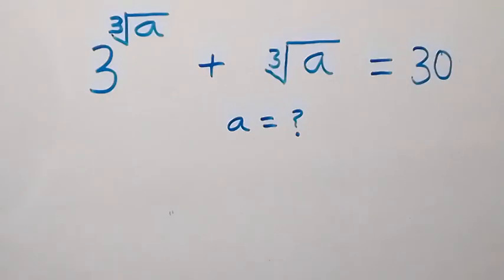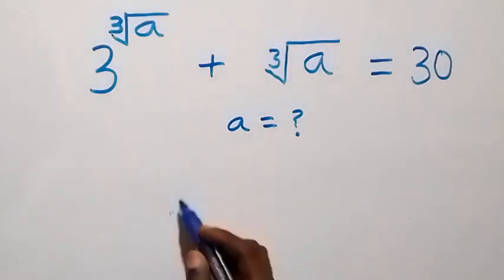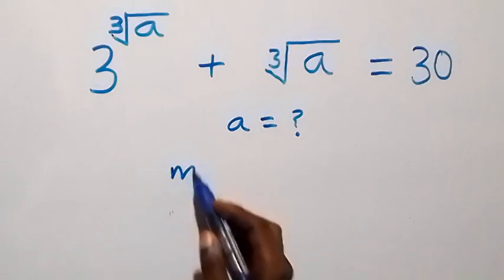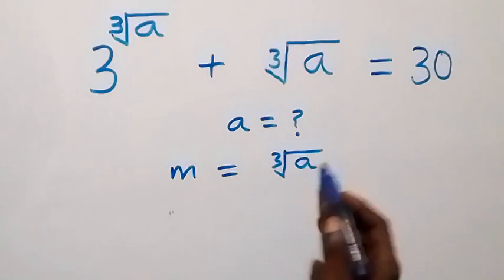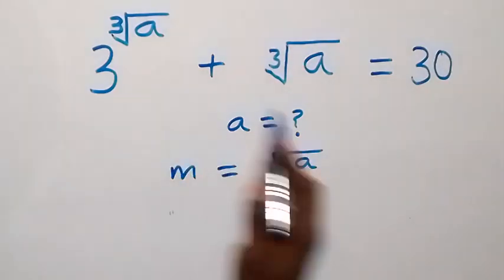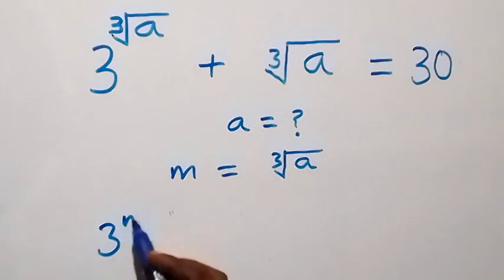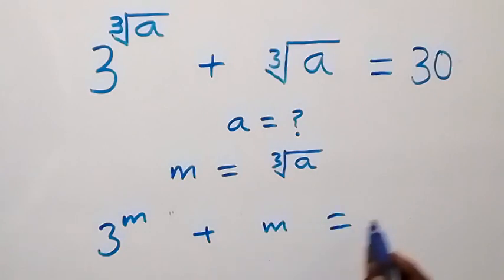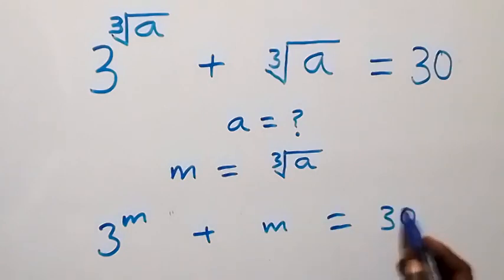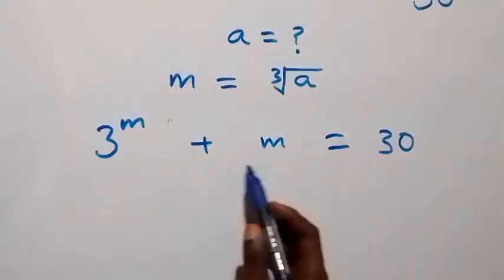Hello, you're welcome. How to solve this math problem. Let m be equal to the k-th root of a. Then we can write what is given as 3 raised to power m plus m equals 30.